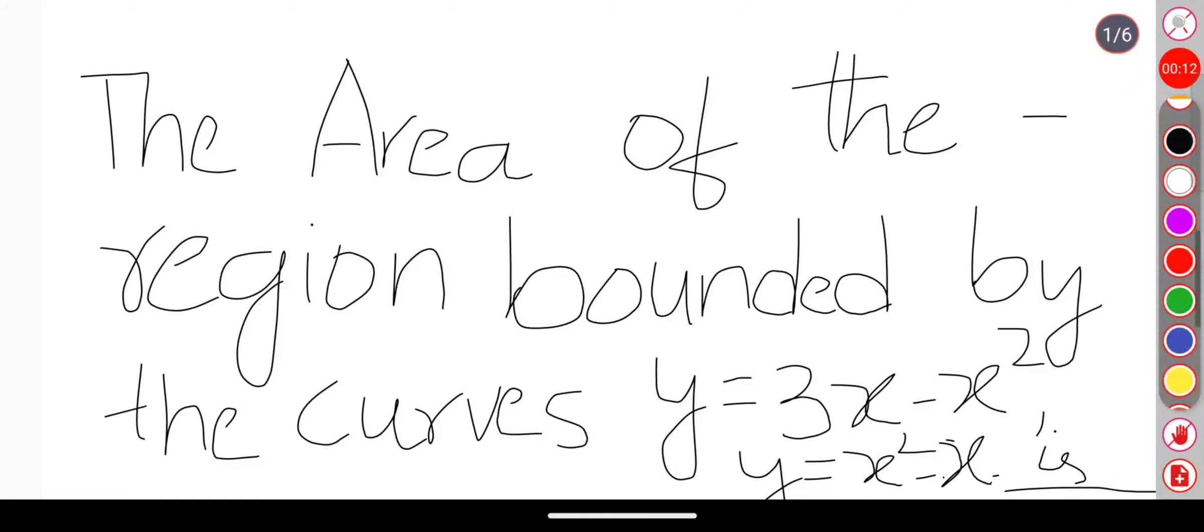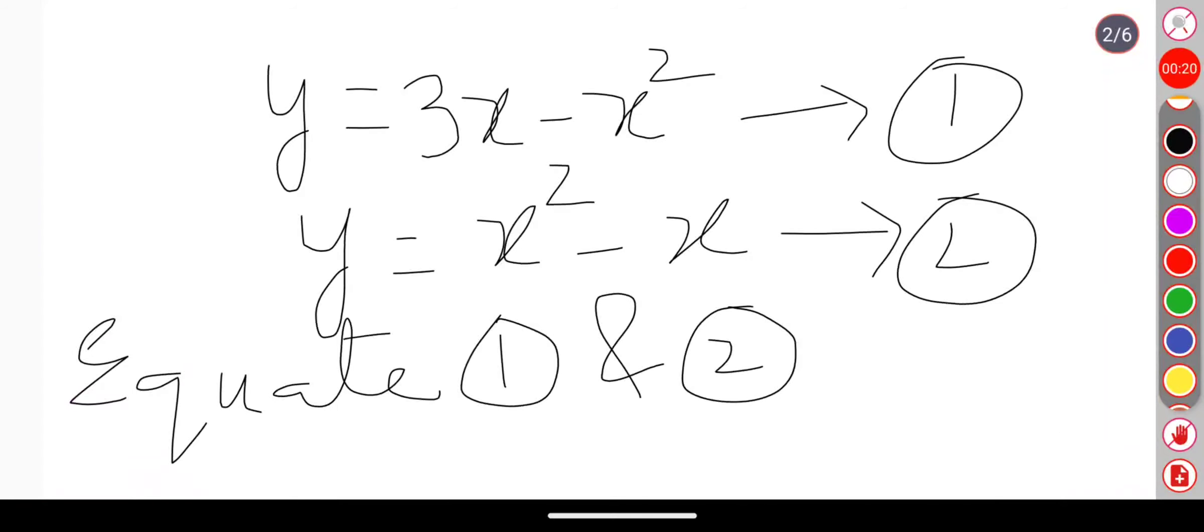is equal to 3x minus x squared and y equal to x squared minus x. Now in order to solve this problem we have a technique. First we will be writing equation 1 and equation 2, then we are equating both equation 1 and 2.